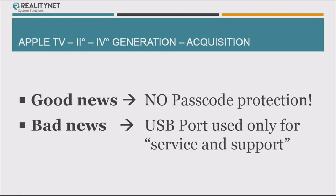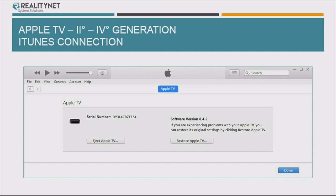With the most recent ones — starting from the second generation to the fourth and fifth generation — the good news is that there's no way to set passcode protection on the Apple TV, as we have on other iOS devices. The bad news is that the USB port is used only, as Apple writes on its website, for service and support. So when you connect the Apple TV to a computer and launch iTunes, you will get only two options: eject or restore. Not really forensics, both of them. So iTunes is not a way to get the data.